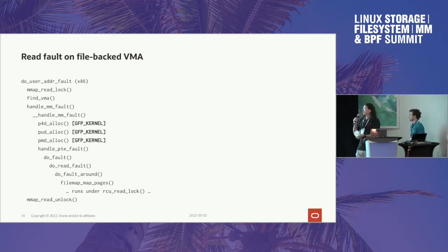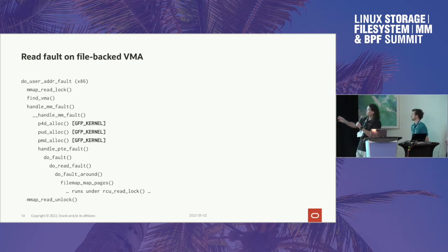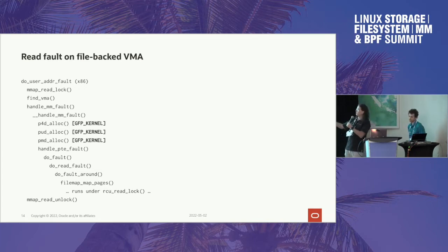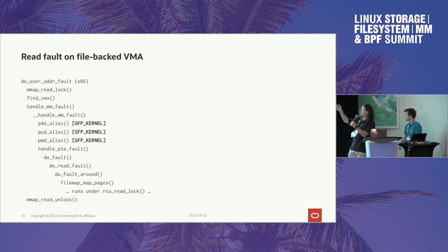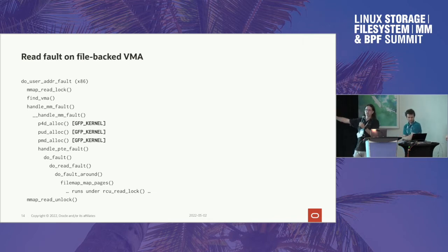What I wanted to talk about was the future — how do we see this going forward? What I drew up quickly during the last talk: this is how a read fault works today. I took x86 as the example. So in the x86 doUserAddressFault function, we take the mMapReadLock and then we call findVMA. The whole way after this, we're expecting the VMA to stay stable because we're holding the mMapReadLock, and if you're going to change a VMA, you have to take the mMapWriteLock.